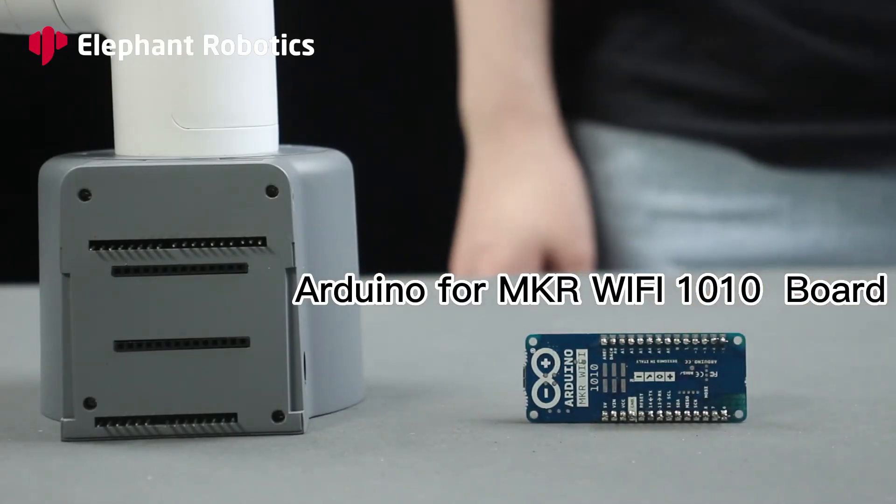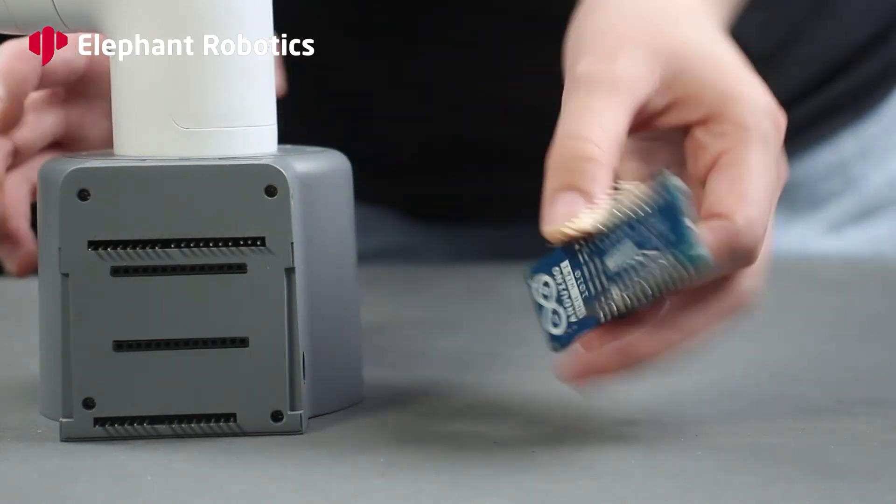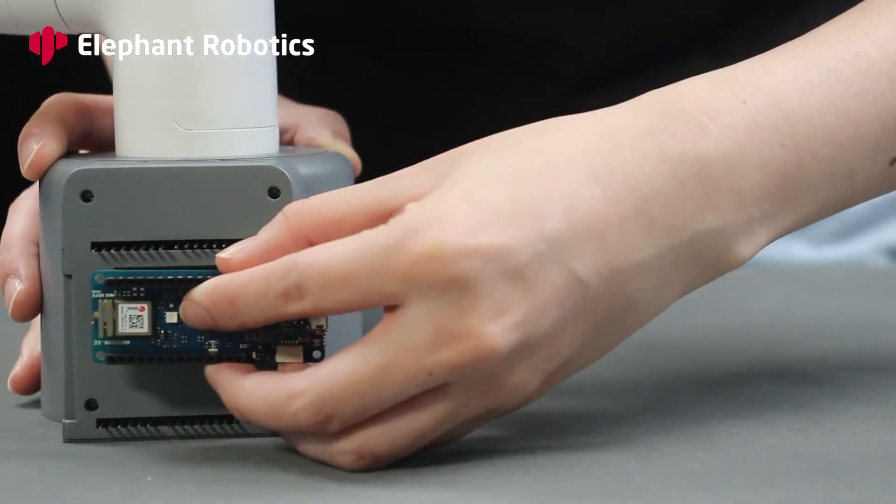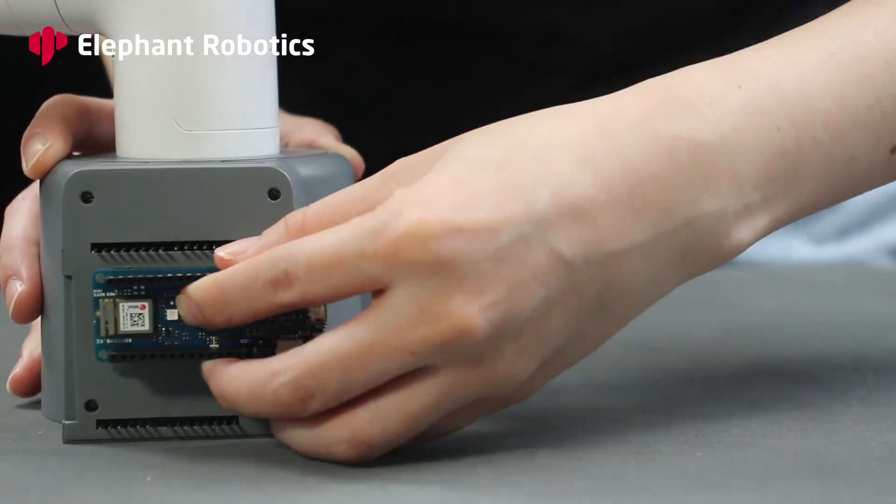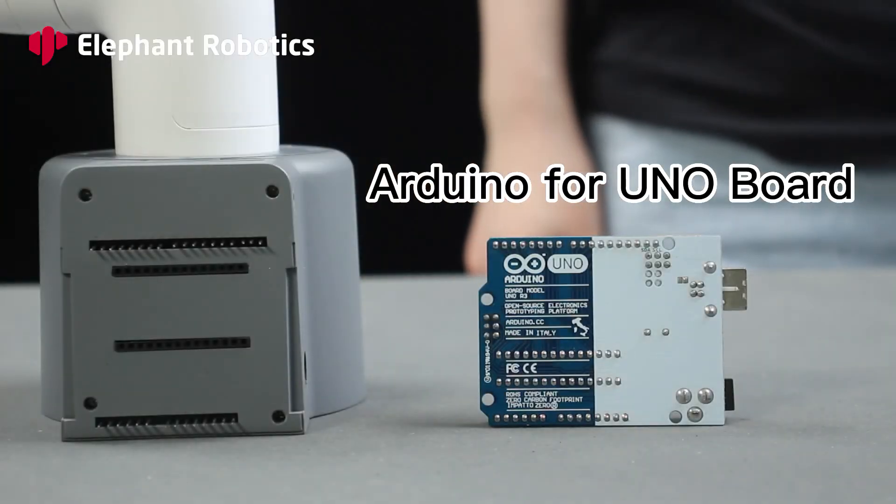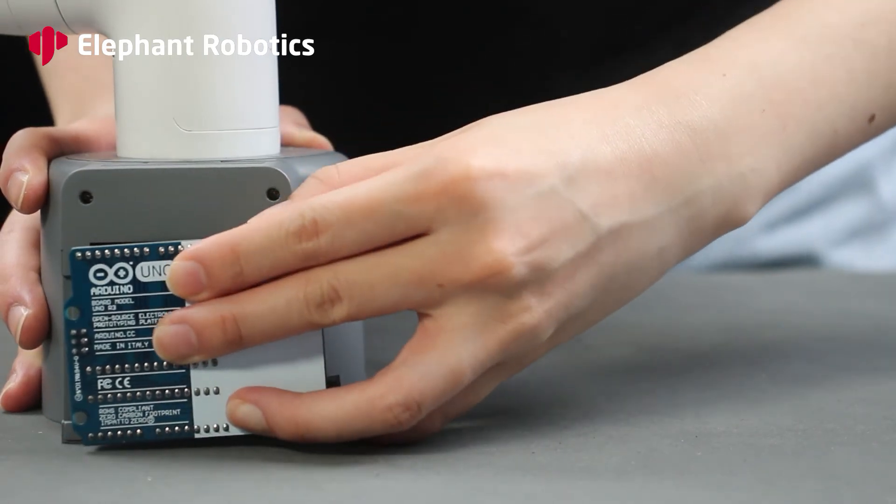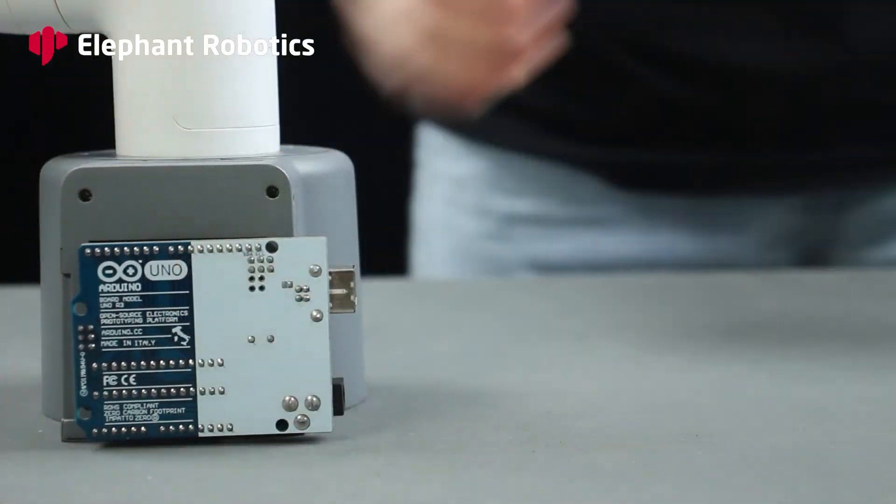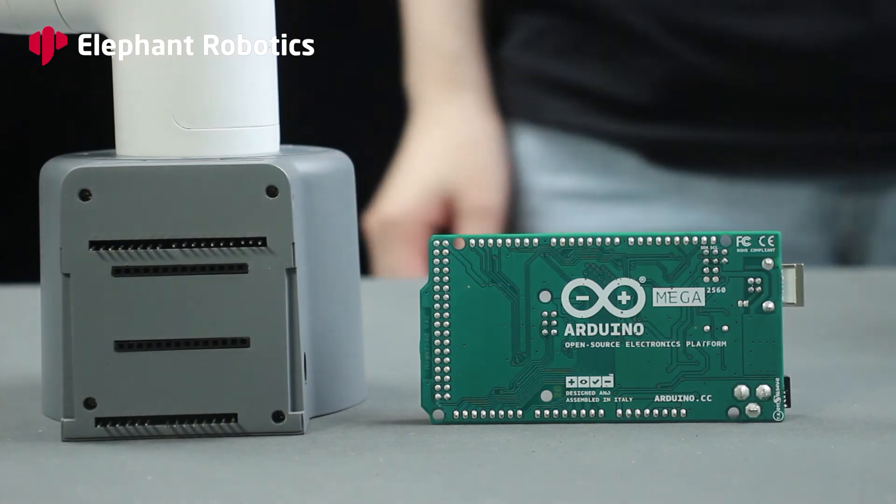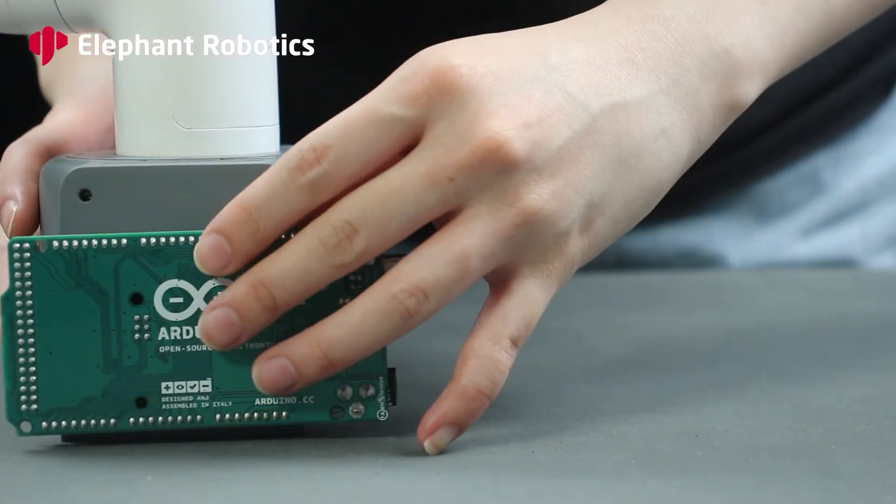Arduino MKR Wi-Fi 1010 Board, the motherboard integrating Wi-Fi and Bluetooth, is suitable for your wireless control development. Uno is the perfect choice for the first Arduino and is also a relatively cheap and easy to install motherboard. It provides richer electronic circuit interfaces than Uno, a motherboard for advanced development.